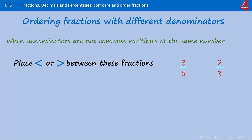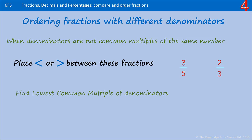You need to decide whether the smaller than or bigger than symbol goes between three-fifths and two-thirds. We need to find the lowest common multiple of the denominators. Our denominators are five and three. The only factor they share is one, so we need to find the lowest number we get when we multiply them — that's known as the lowest common multiple. In this case, five and three can be multiplied together to find the lowest common multiple, which is 15.